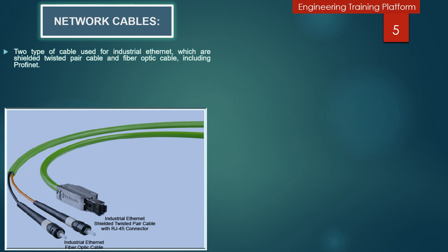Now we will discuss about network cables. The network cables include PROFIBUS, PROFINET, optical fiber, and ASi network cables. Two types of cables are used for industrial Ethernet including PROFINET: shielded twisted pair cables and fiber optic cables. You can see in the picture the RJ45 connector with industrial Ethernet shielded twisted pair cables, and the other is the optical fiber cable with its connectors.